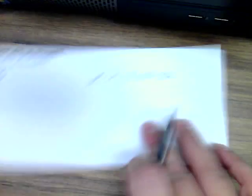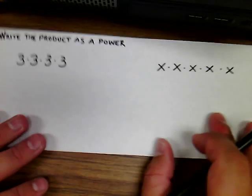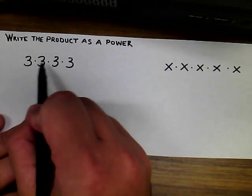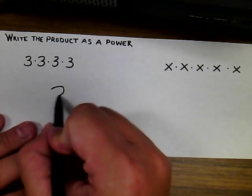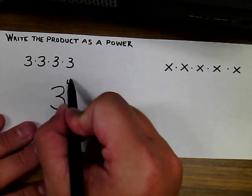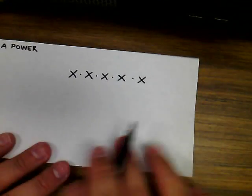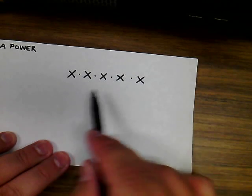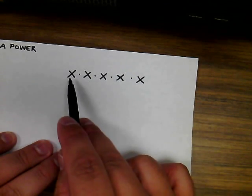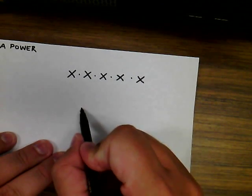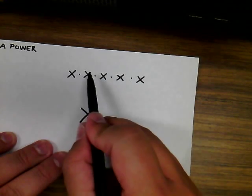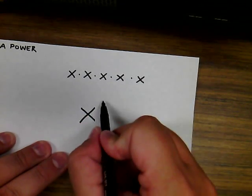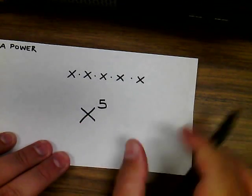When asked to write the product out as a power, you would count how many times the base is repeated and write that as your exponent. If given a variable, it's still the same number, you just don't know the value of the number. So this variable x would be my base, and because it has been repeated 5 times, the exponent would be a 5.